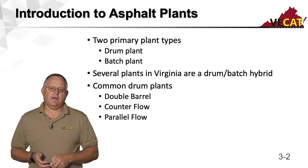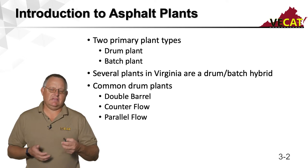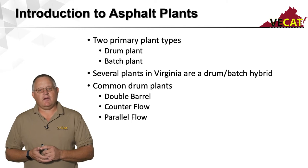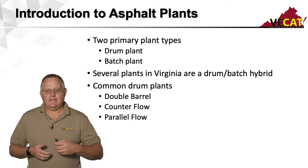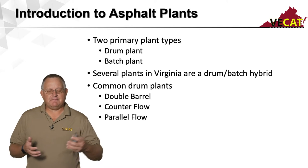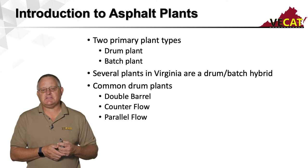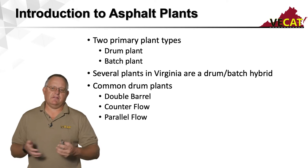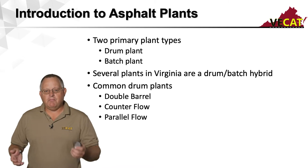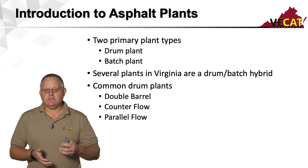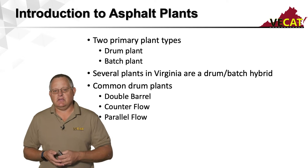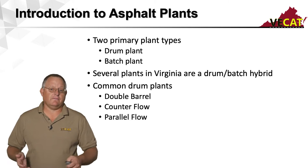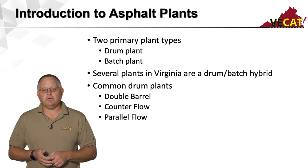Let's look at the types of plants we use here in Virginia. Most of them are drum plants, but we do have quite a few batch plants around the state. Several have been combined, taking pieces of a batch plant and pieces of a drum plant blended together as a hybrid. For most of the work on VDOT jobs, especially high production, they're going to be a drum type plant — whether a double barrel, counter flow, or parallel flow.